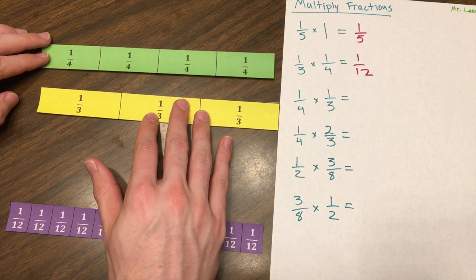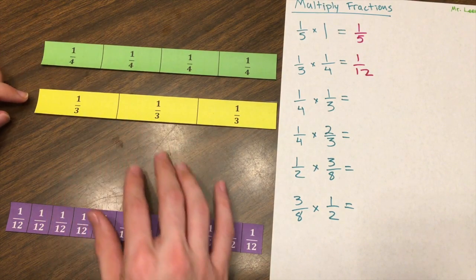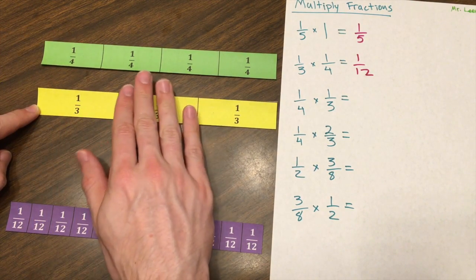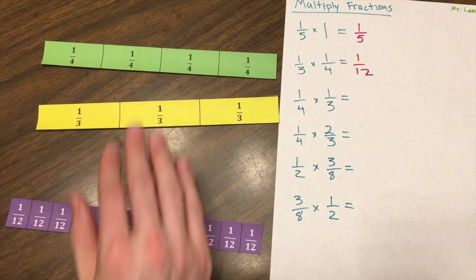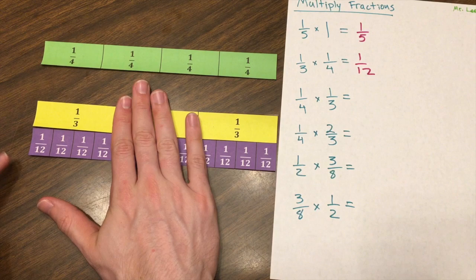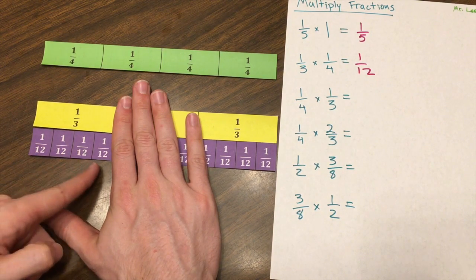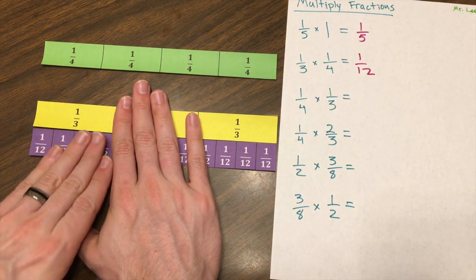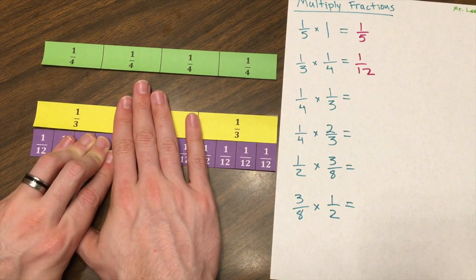What if I switch this around? So what is one-fourth of one-third? So how can I split this one-third up into four equal parts? Well, let's see if the one-twelfth works, and it does. I can split that one-third up into four equal parts. That's one-fourth of one-third is one-twelfth.